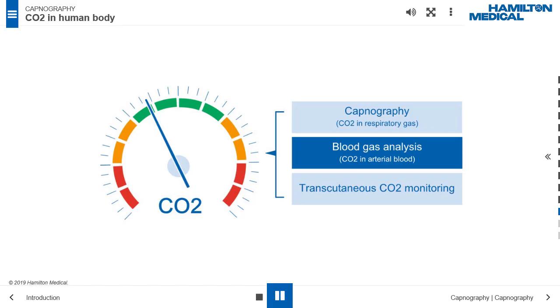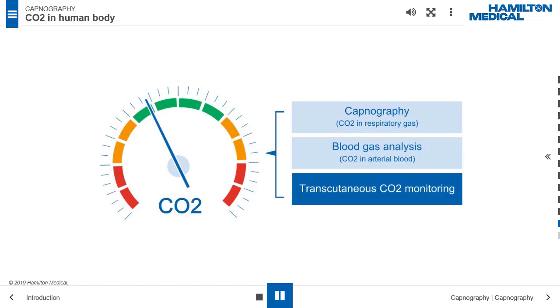Arterial blood gas analysis, ABG, measures the CO2 in arterial blood, that is, PaCO2. Transcutaneous CO2 monitoring measures the CO2 that diffuses through the skin, that is, TCPCO2.